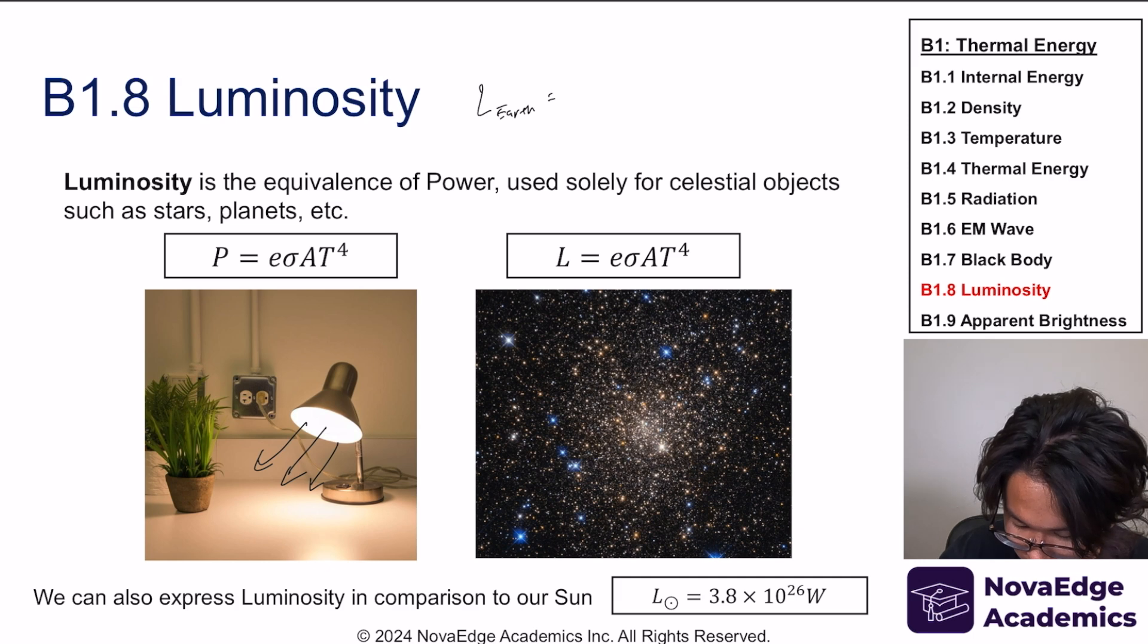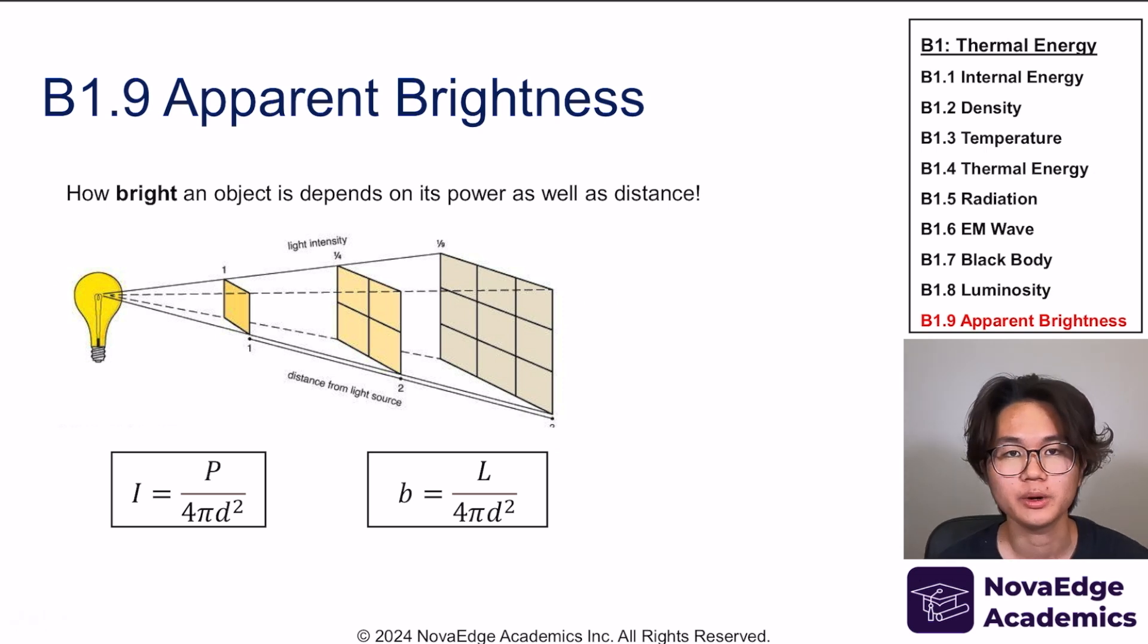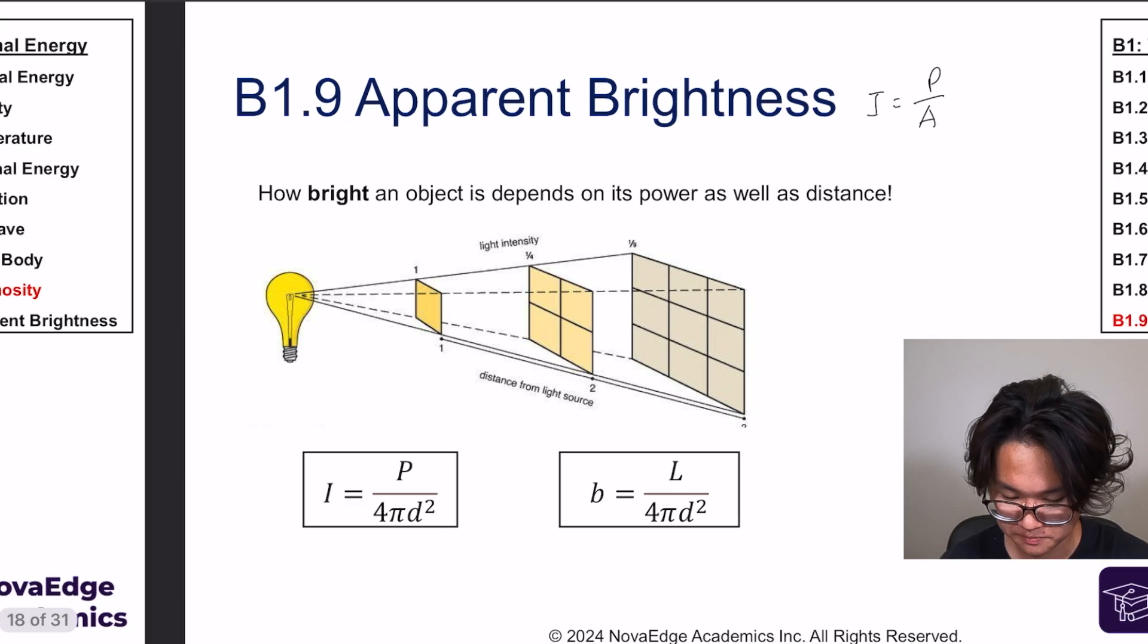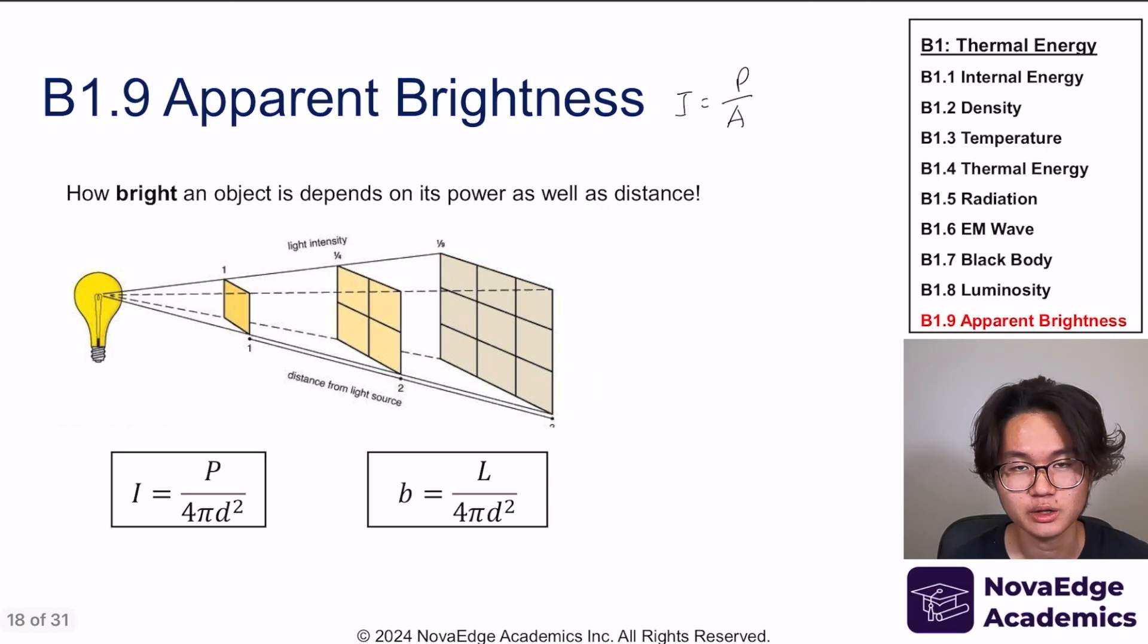We also have something called apparent brightness, and apparent brightness is the same thing as intensity. Remember that intensity is power over area. One thing I want to note is that the sun emits 3.8 times 10 to the 26 watts, but as Earth we don't get 3.8 times 10 to the 26 watts—that's a tremendous amount and we would essentially burn as a planet if we did. We receive typically around 2000 watts close to that, and then taking into account the clouds and everything, what we get on the surface of the Earth is much less—about 340 watts.